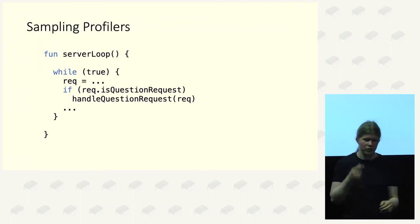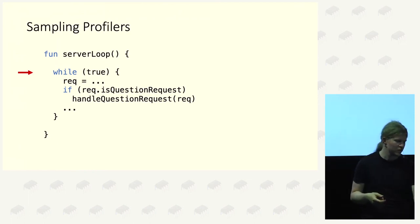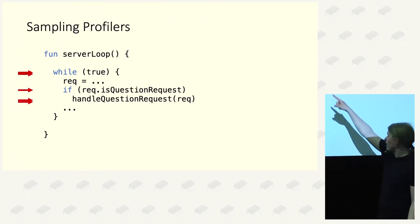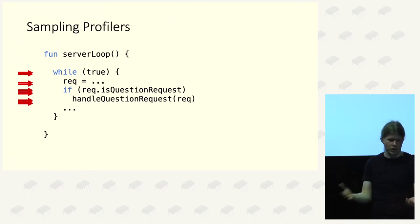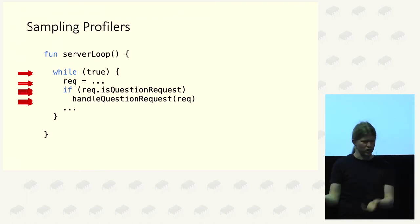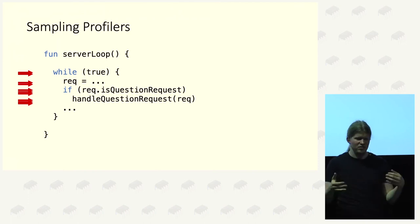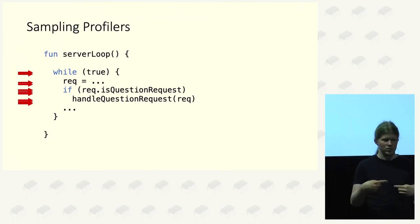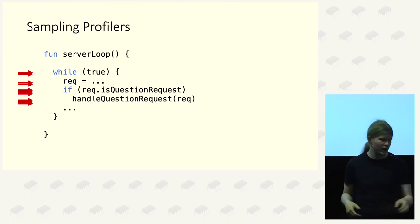So people came up with a different idea: sampling profilers. The idea is we only sample what the application is doing. For example, we ask the JVM regularly, 'Hey, what is this application doing?' That's pretty cool. It's approximate, but it's usually fine because we only care about hotspots in the application, and we don't disturb your application because we're not actually modifying any code.